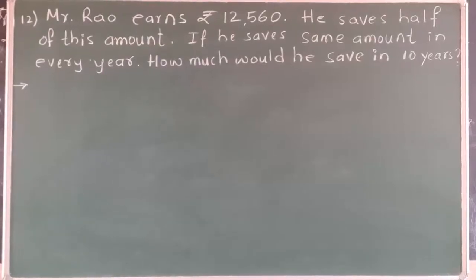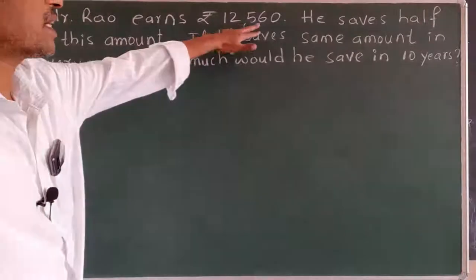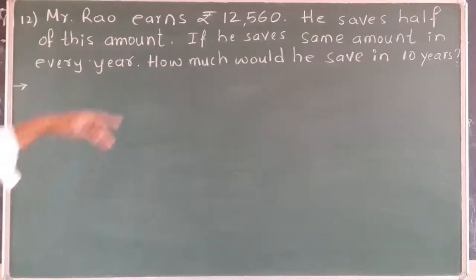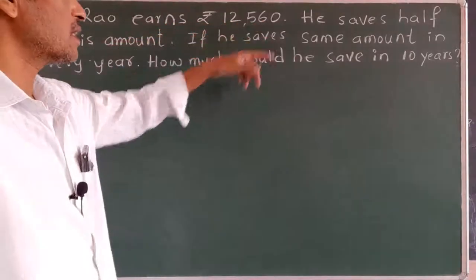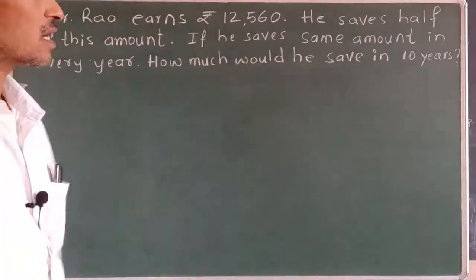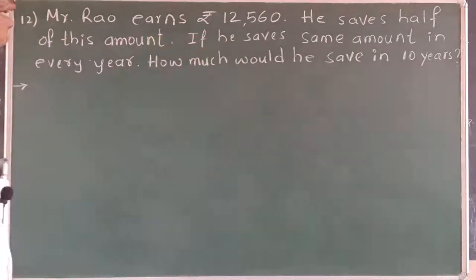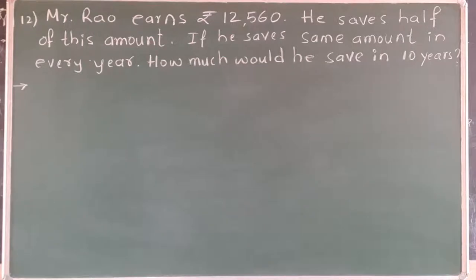Now the 12th problem: Mr. Rao earns rupees 12,560. He saves half of this amount — half of 12,560 he saves. If he saves the same amount every year, how much would he save in 10 years? So one month's earning is given, and half of this earning he saves. We have been asked how much amount he saves in 10 years.